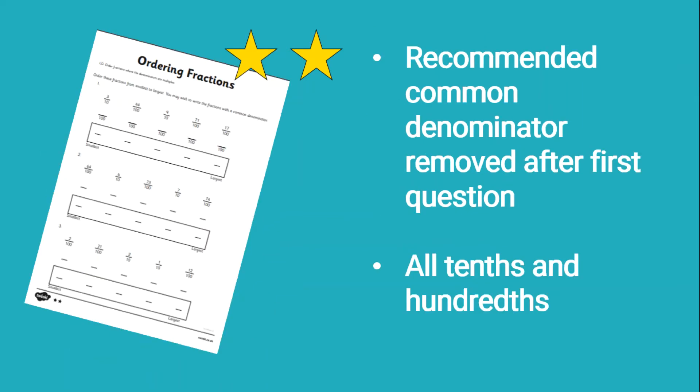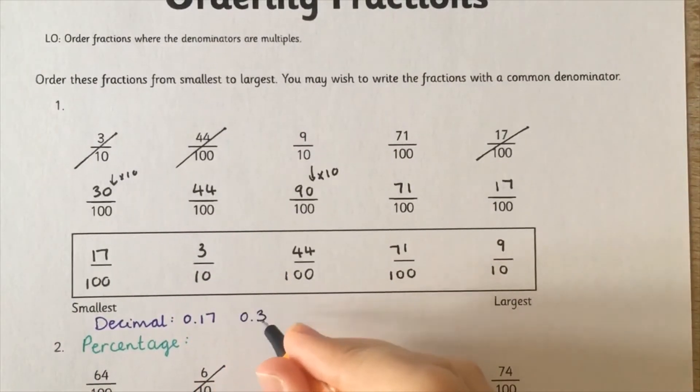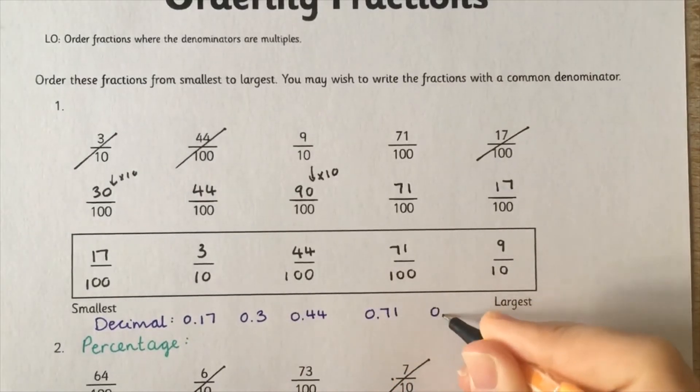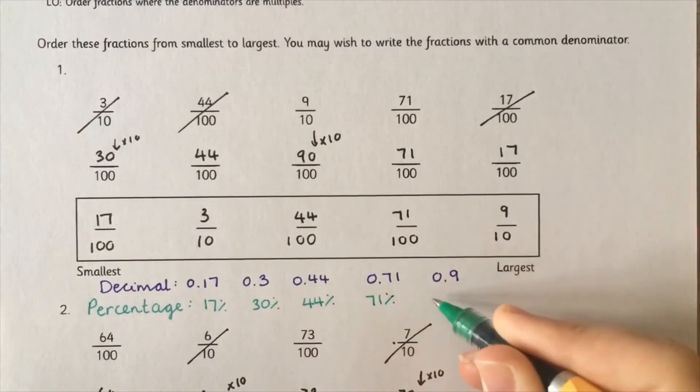On star sheet 2 the suggested common denominator is removed after question 1, but all the fractions are tenths or hundredths. This could be a great opportunity to provide some extra stretch for any rapid graspers by asking them to convert the ordered fractions into decimals and percentages.